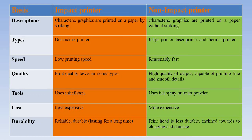The second difference is types. Dot matrix printer is an impact printer, while inkjet printer, laser printer, and thermal printers are non-impact printers.